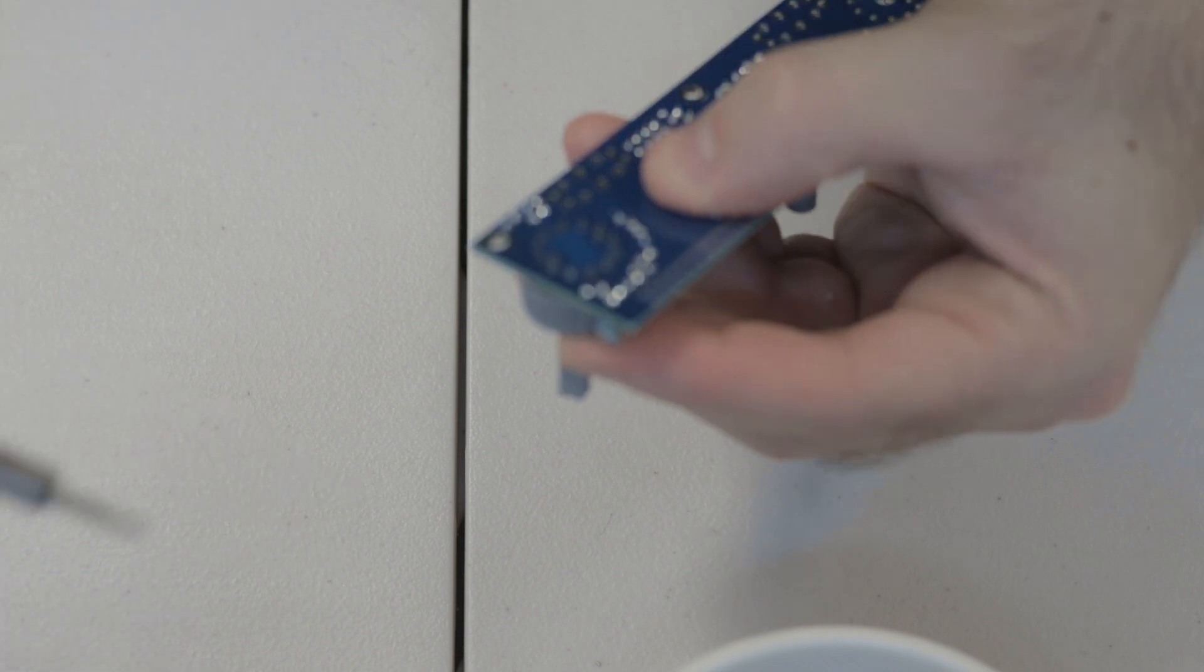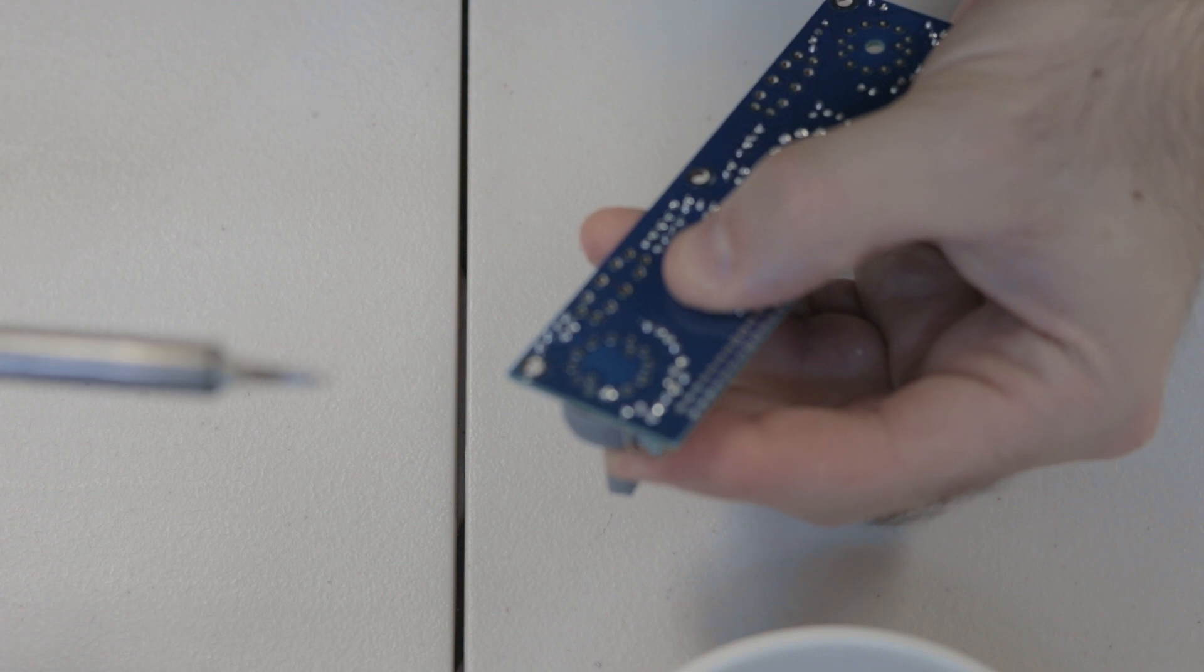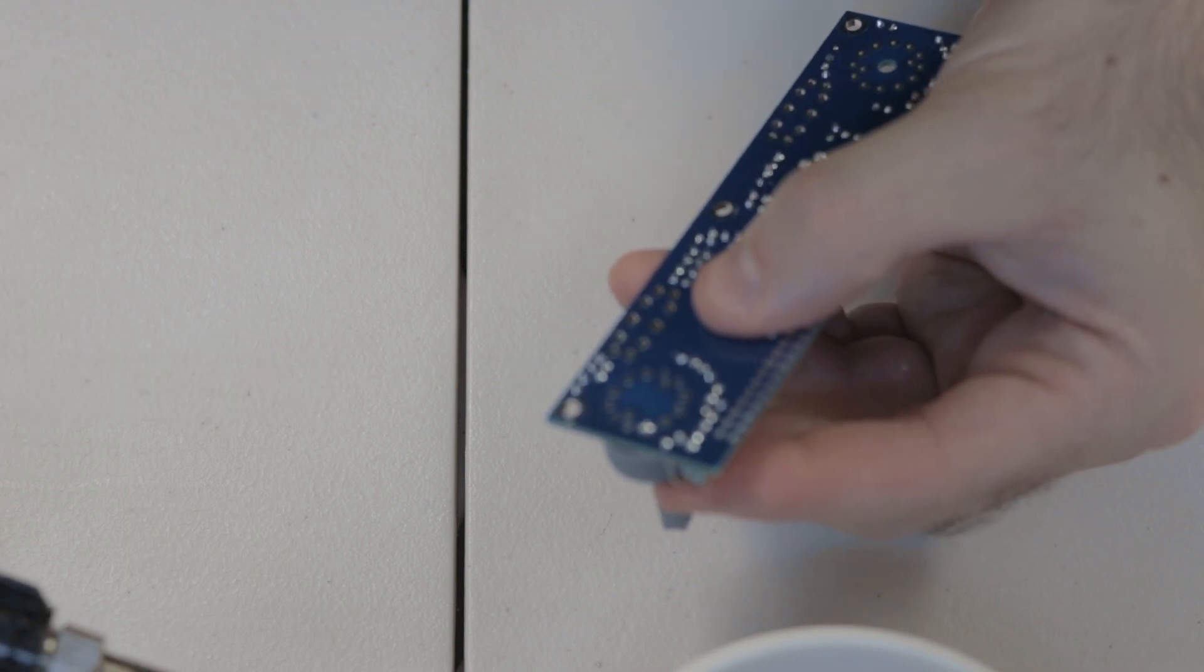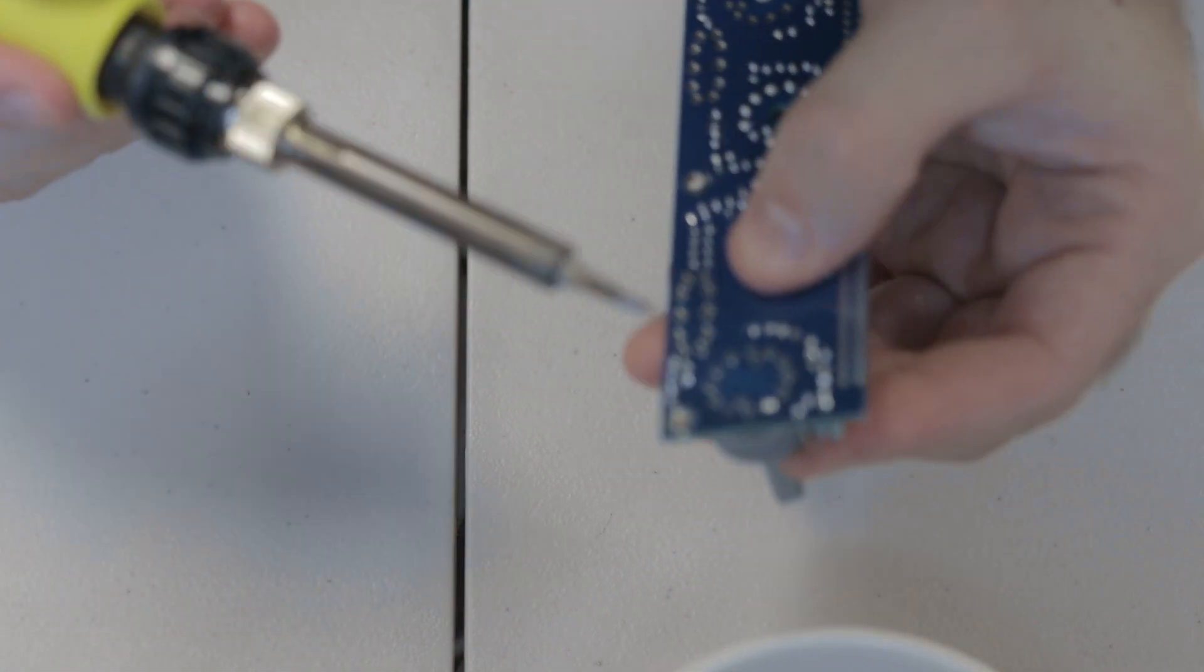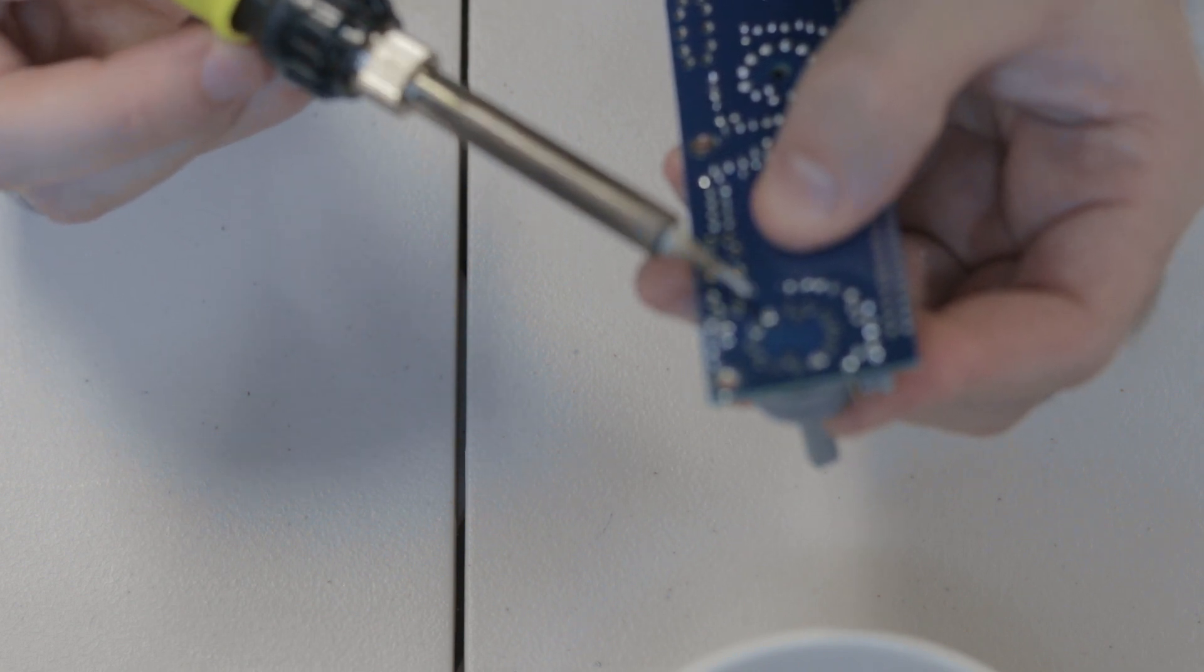What you can do is hold it in place with your hands between the daughter board, and just solder one of the legs and do what we do with other bigger components, where you solder one leg, then check the orientation.